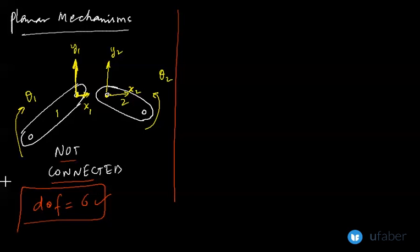Now what I will do, I will connect these two links by a joint. So this is link number one, and this is link number two. And they are joined at this point. This is a full joint.